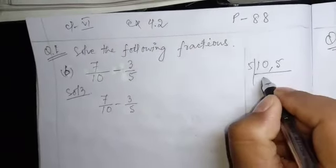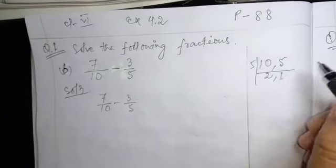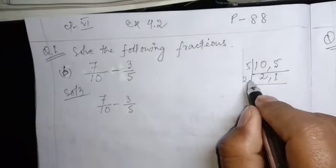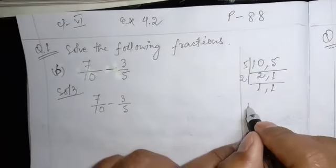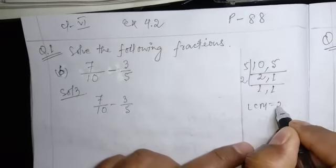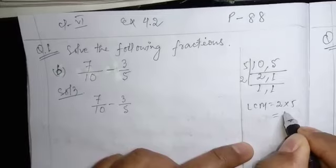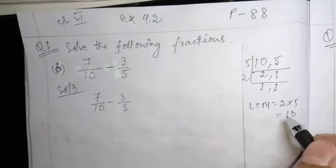5, 5, 2 are 10, 5, 1 is 5, 2, 2, 1 is 2, 1. LCM, 2 into 5 are 10. Their LCM is 10.